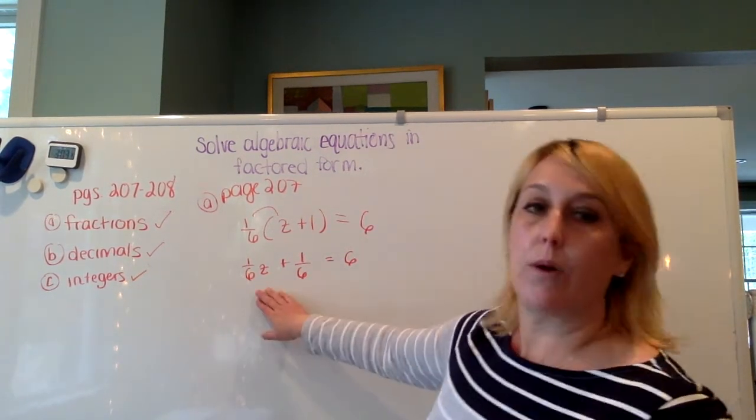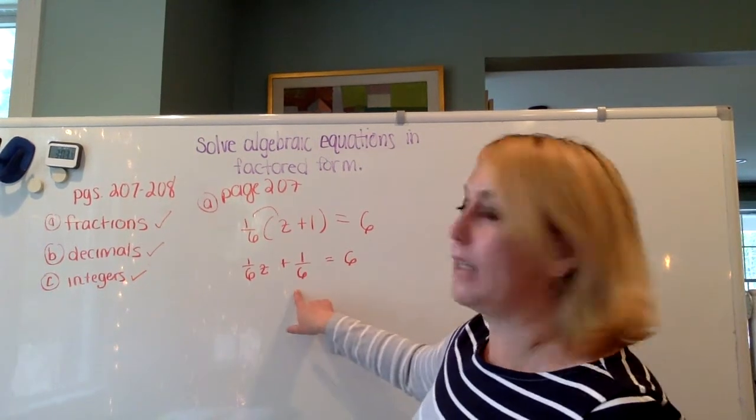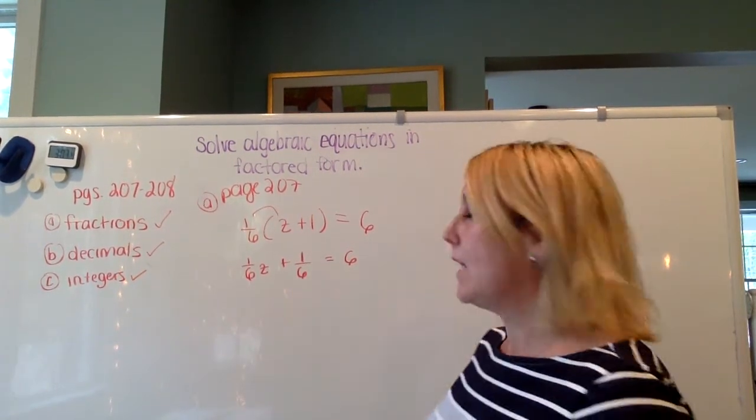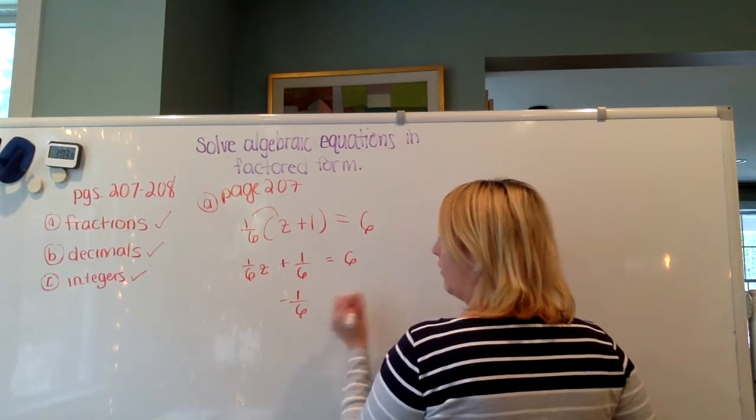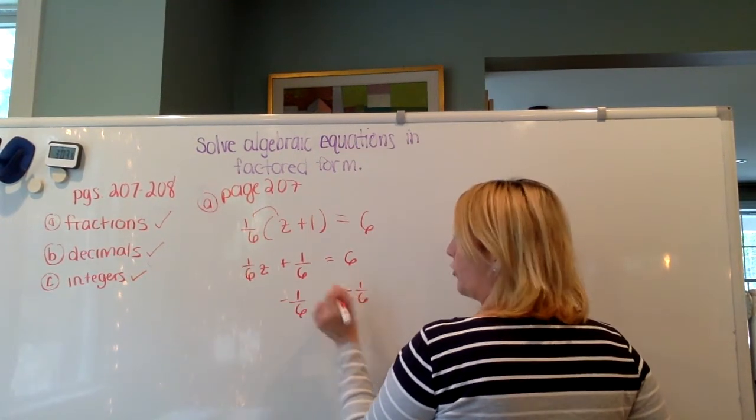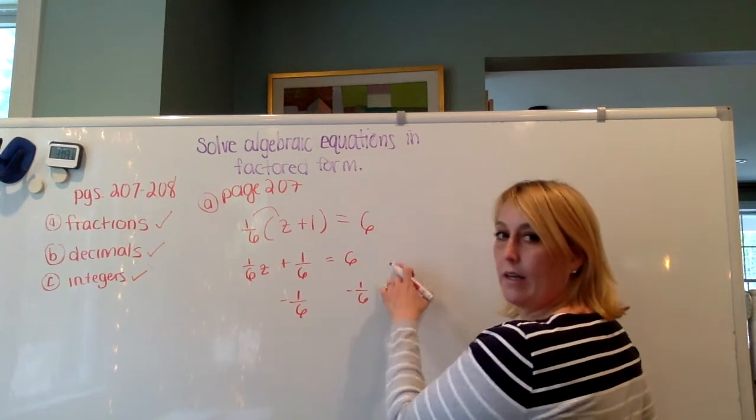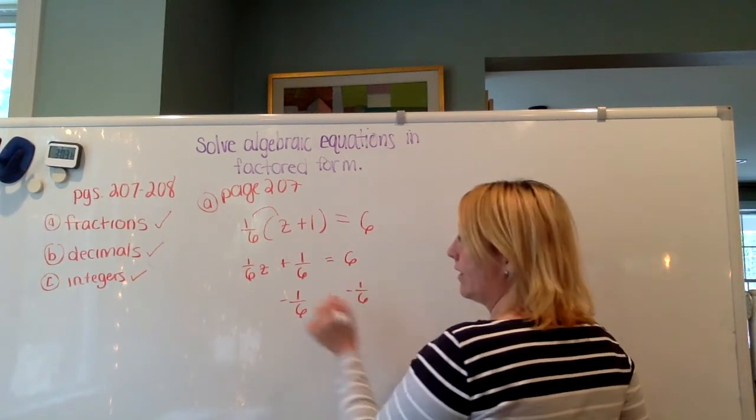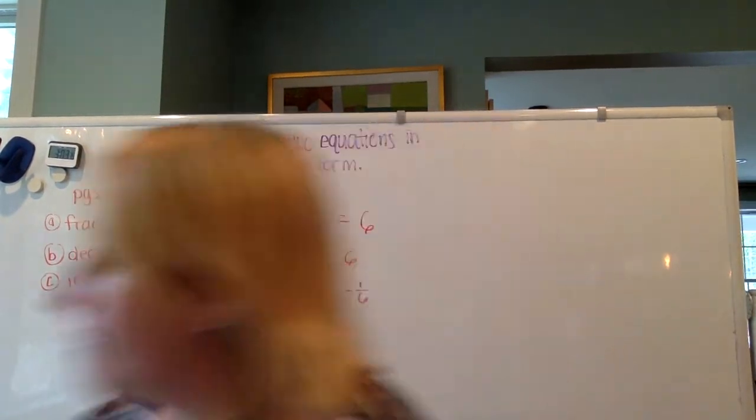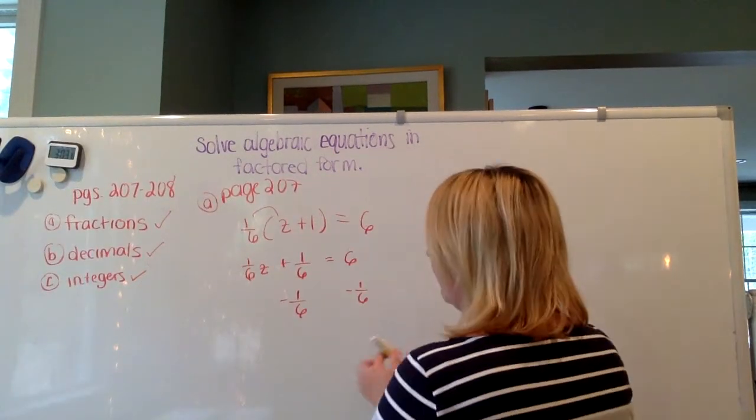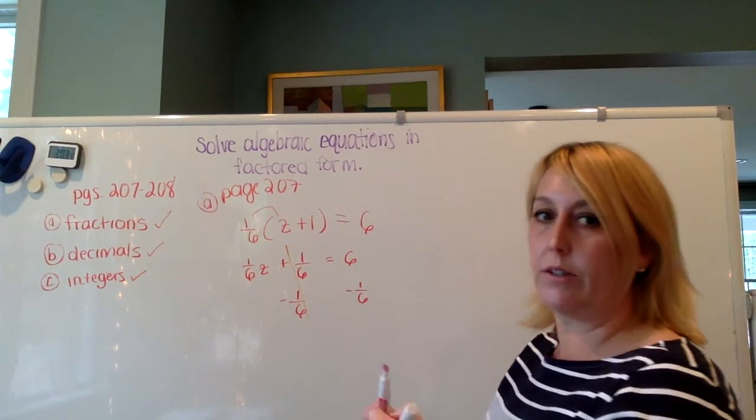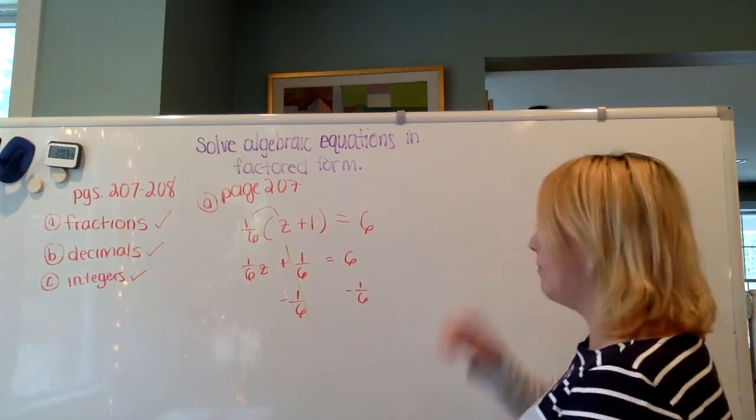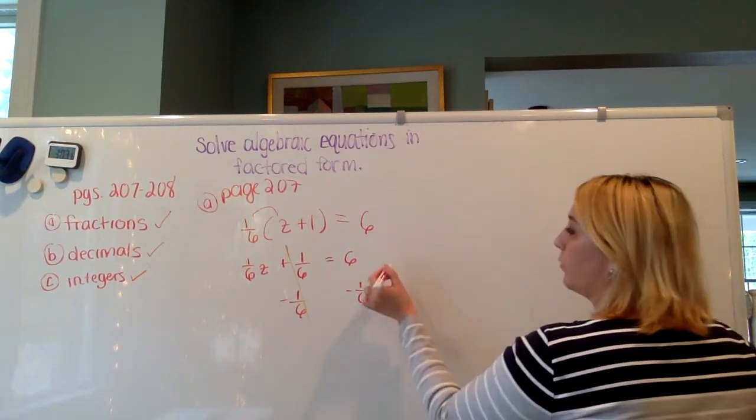So now before I can do anything about isolating this variable, I need to get rid of my constant, right? So the opposite of positive one-sixth is negative one-sixth. But if I subtract one-sixth on this side, I need to do the same on the other side. So the one-sixth on this side, they cancel each other out. Positive times a negative, they're equal to zero. But on this side, I've got minus one-sixth.